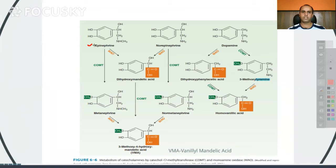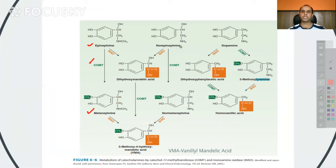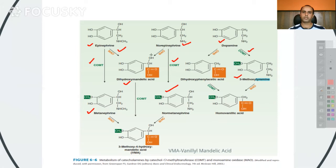Epinephrine under the action of COMT gets converted into metanephrine. Similarly, norepinephrine under the action of COMT gets converted into normetanephrine. Dopamine under the action of COMT gets converted into 3-methoxytyramine. When MAO acts on epinephrine, it forms dihydroxymandelic acid. Similarly, norepinephrine under the action of MAO also gives dihydroxymandelic acid, as the COOH group has replaced part of both epinephrine and norepinephrine.